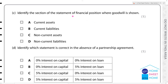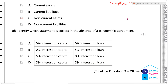Identify the section of the Statement of Financial Position where goodwill is shown. The options are: Current Assets, Current Liabilities, Non-current Assets, Non-current Liabilities. Goodwill is shown under Non-current Assets — specifically Intangible assets.